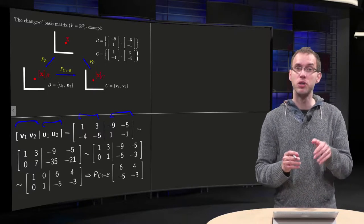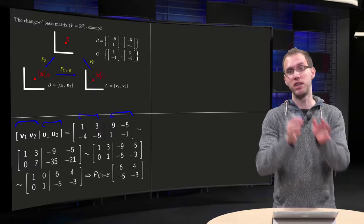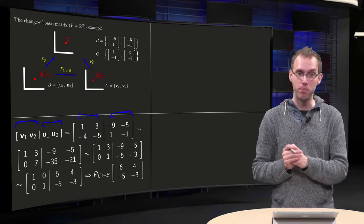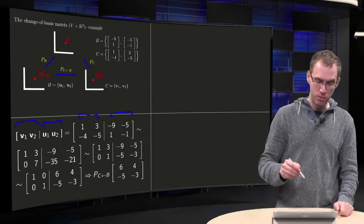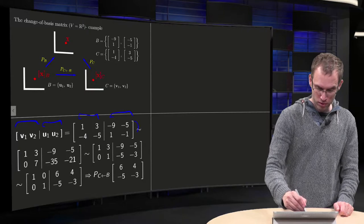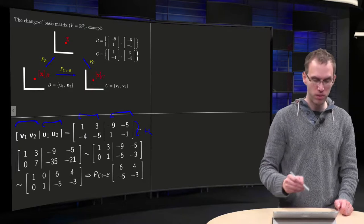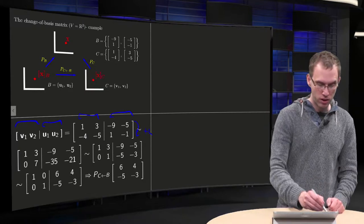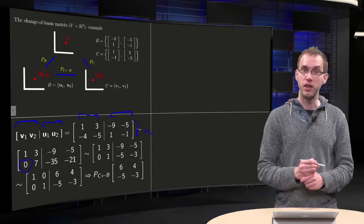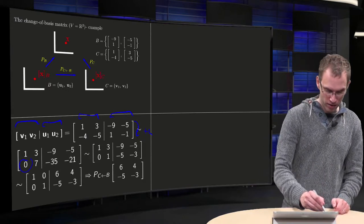And now we have to row reduce until we have the identity matrix and then after the bar we will get our P from B to C. So what do we do? We add the first row 4 times to the second row, so we get 0 over here. 4 times 3 equals 12, minus 5 equals 7.